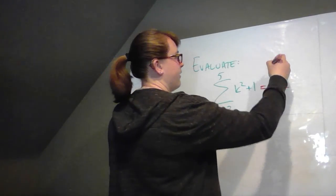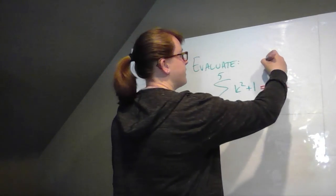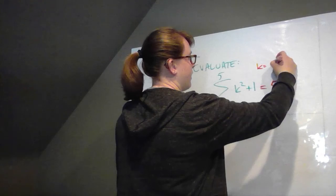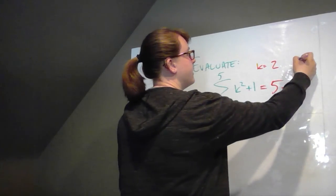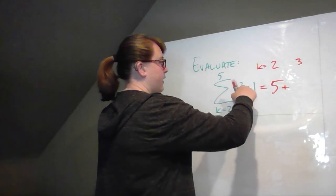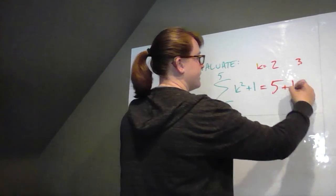Then I want to go ahead, if you have a lot of terms to write out, sometimes it's helpful to write what term you're on here. So that's k equals 2. The next one will be k equals 3. 3 squared is 9. 9 plus 1 is 10.